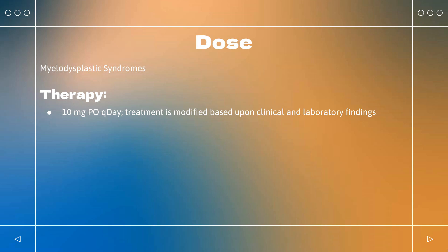Mantle cell lymphoma: Indicated for MCL in patients whose disease has relapsed or progressed after two prior therapies, one of which included bortezomib. Dose: 25 mg orally once daily on days 1–21 of repeated 28-day cycles. Treatment is modified based on clinical or laboratory findings. Continue until disease progression or unacceptable toxicity.